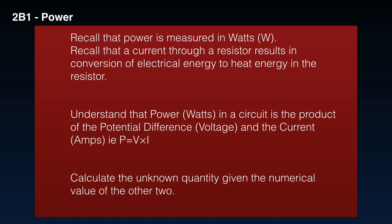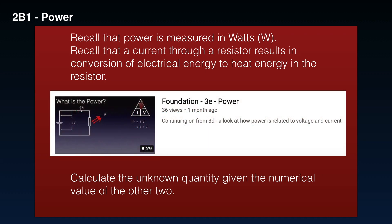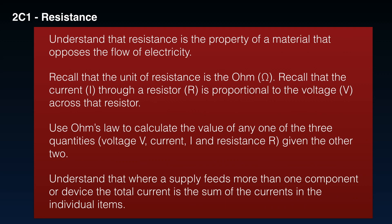2B1, and in that previous section, there is no further section for the intermediate. 2B1 for power. Recall that power is measured in watts. Recall that a current through a resistor results in conversion of electrical energy to heat energy in the resistor. Understand that power, in watts, in a circuit, is the product of the potential difference, or voltage, and the current, or amps, i.e. P equals V times I. And calculate the unknown quantity given the numerical value of the other two. Once again, this is covered in foundation 3E power, which you should have had a look at for your foundation exam. You might just need to run a quick refresher. Once again, on 2B1, there is no intermediate section that corresponds to it.